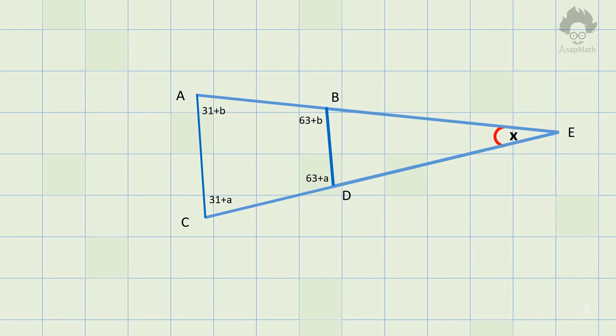As angle B of quadrilateral is 63 plus B, then we can write angle DBE as 180 minus (63 plus B). Similarly, we can write angle BDE as 180 minus (63 plus A). Now we know two angles of BDE triangle in terms of A and B and also we know an expression for A plus B. Let's see whether we can find the unknown angle using this data.